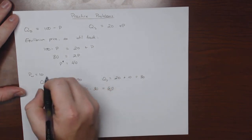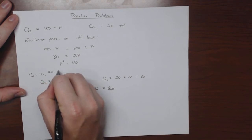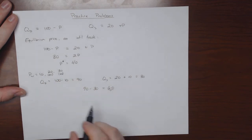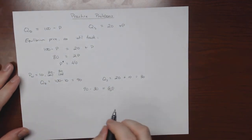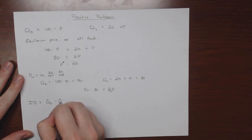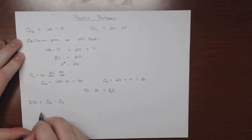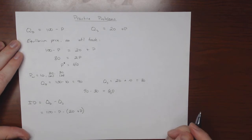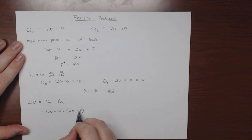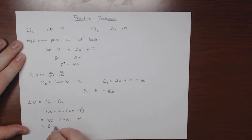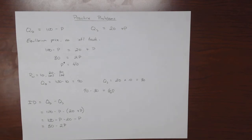We can repeat this for various world prices — say, a world price of 20 and 30. The answers are 40 and 20 — go through and solve those on your own. Now, a general equation for import demand: import demand equals quantity demanded minus quantity supplied, which is 100 minus p minus (20 plus p). Here's where a lot of people get tripped up — they forget that the minus sign has to distribute, so this becomes 100 minus p minus 20 minus p, which equals 80 minus 2p. That's the general equation for the import demand curve.